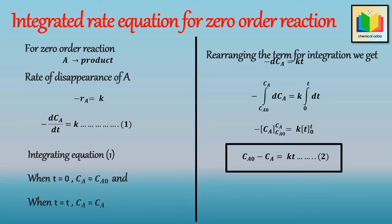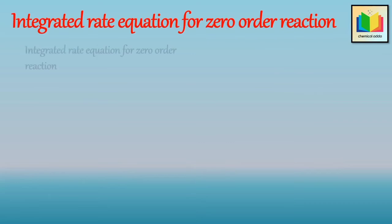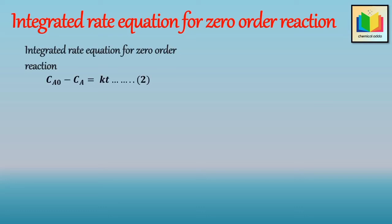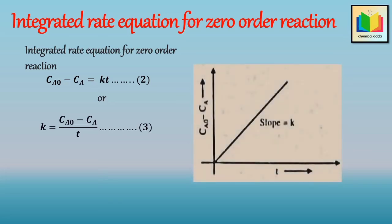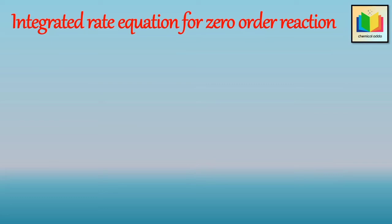This equation can also be written as k is equal to C_A0 minus C_A divided by t. So if we plot C_A0 minus C_A versus t, we get a straight line passing through the origin with slope equal to k. From the graph and equation 3, we can conclude that the specific reaction rate k depends on concentration and time, hence the dimension of k is concentration divided by time.